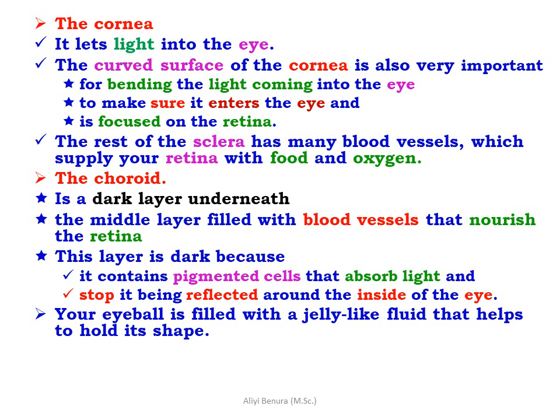The rest of the sclera has many blood vessels which supply the retina with food and oxygen. The choroid is a dark layer underneath; this middle layer is filled with blood vessels that nourish the retina. This layer is dark because it contains pigment cells that absorb light and stop it from being reflected around the inside of the eye.